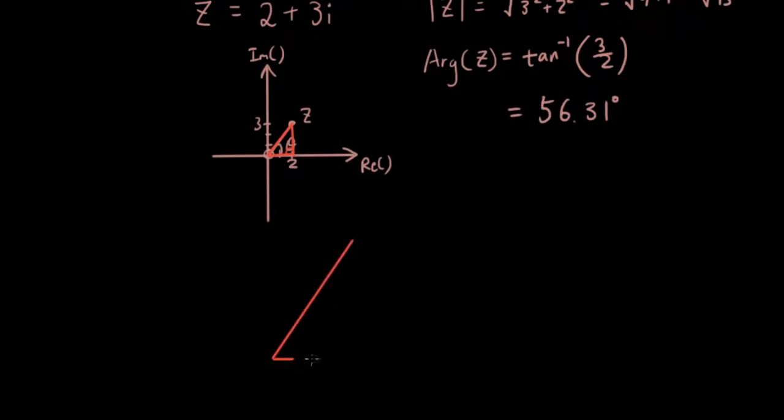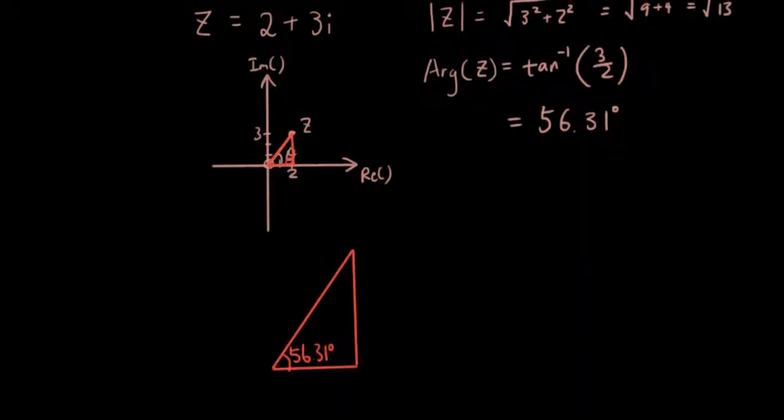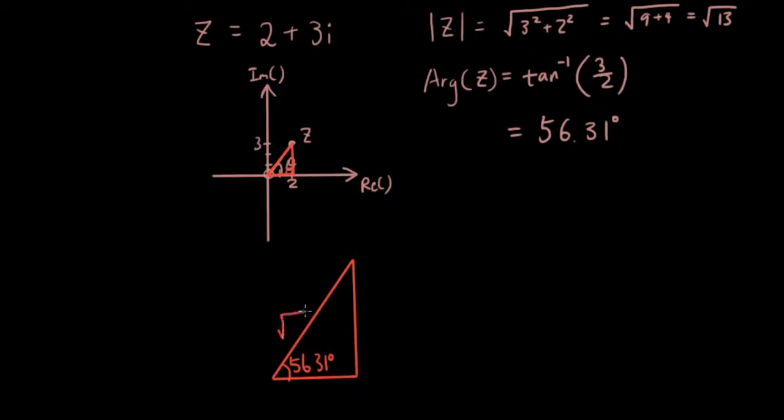This is the right angle triangle that is created with the complex number modulus as the hypotenuse. So if I draw out this triangle, I have theta over here, which is 56.31 degrees, I have the modulus, which is square root of 13.